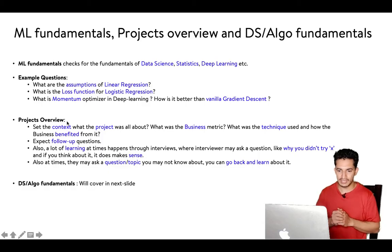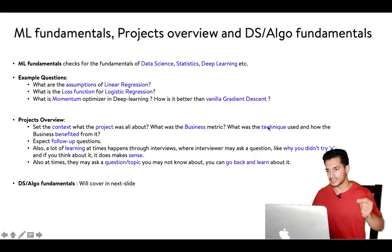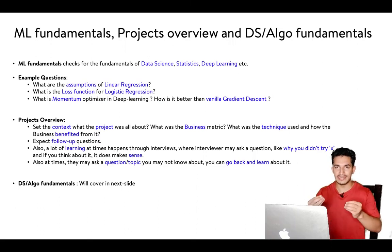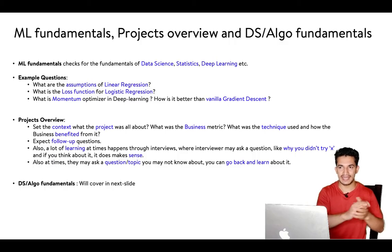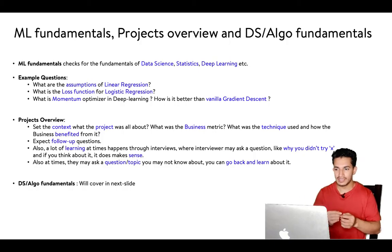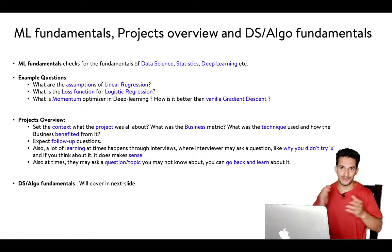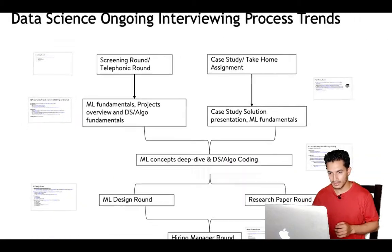For the project overview, my suggestion is to set the context clearly — what the project was about, the business metric, the technique used, and how it benefited the business. Expect follow-up questions on why a particular metric or technique was chosen. One key observation: a lot of learning happens through this interview process, as the interviewer may point out observations or suggest alternatives. If you're asked about a topic you don't know well, go back and learn about it afterward.